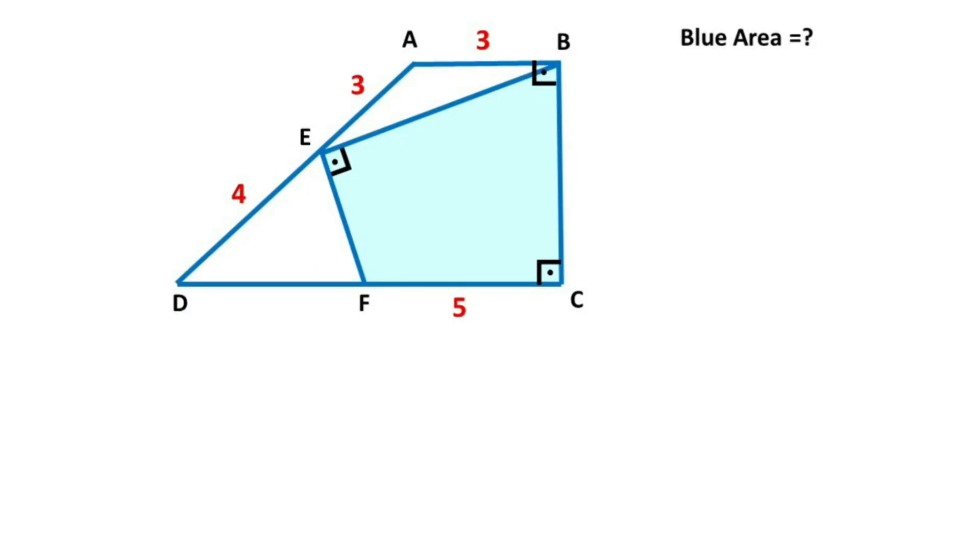Hello everyone. In this video we have one trapezoid. These sides are given: 3 units, 4 units, and this side is 5 units. The blue shaded area is asked. First step, let's call here alpha.